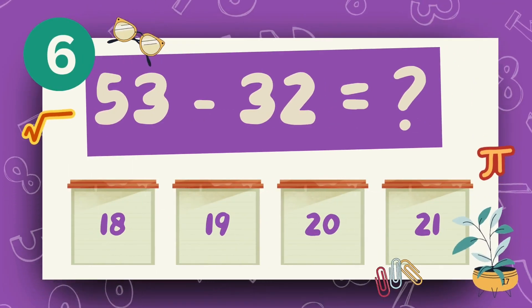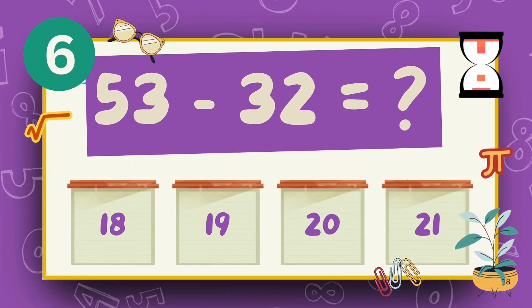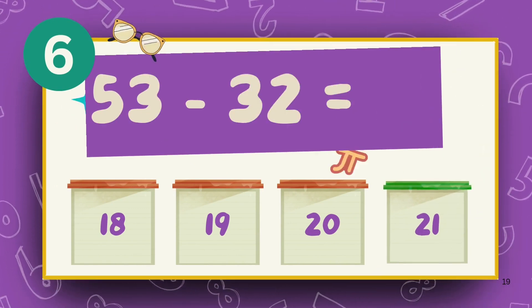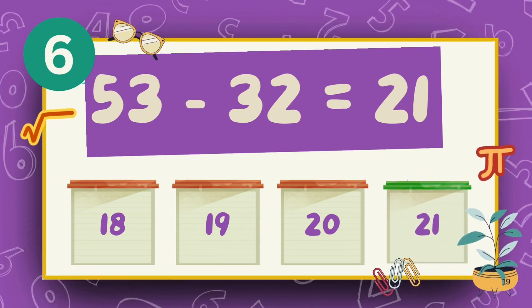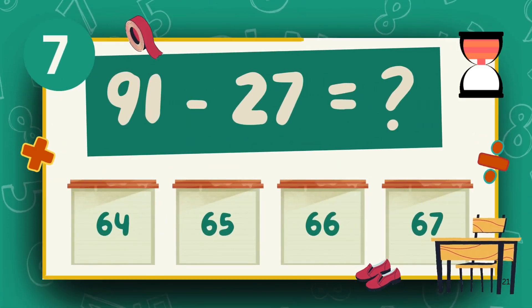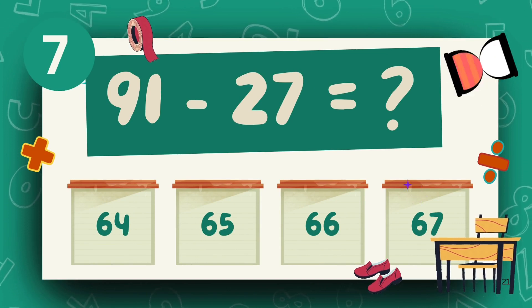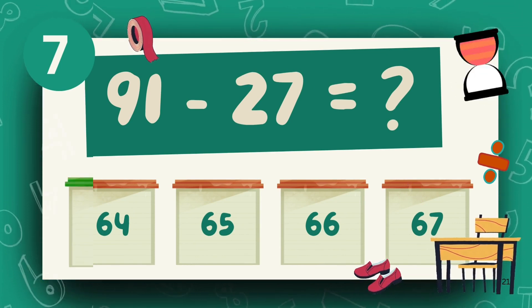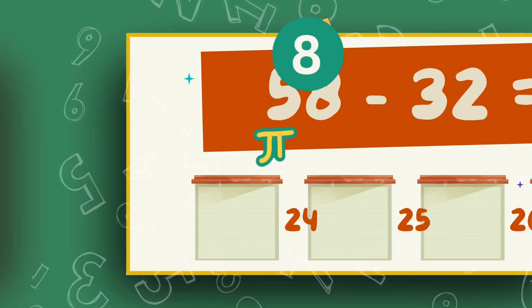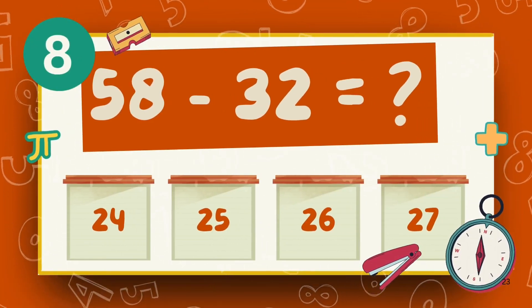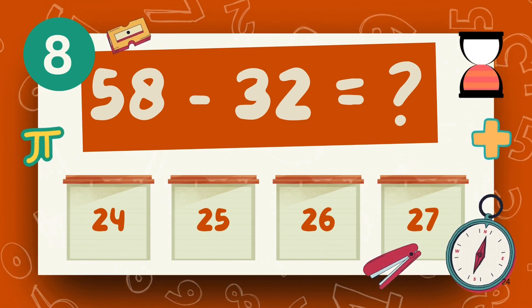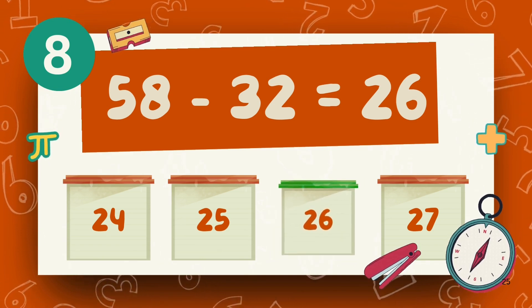What is 53 minus 32? The answer is 21. What is 91 minus 27? The answer is 64. What is 58 minus 32? The answer is 26.